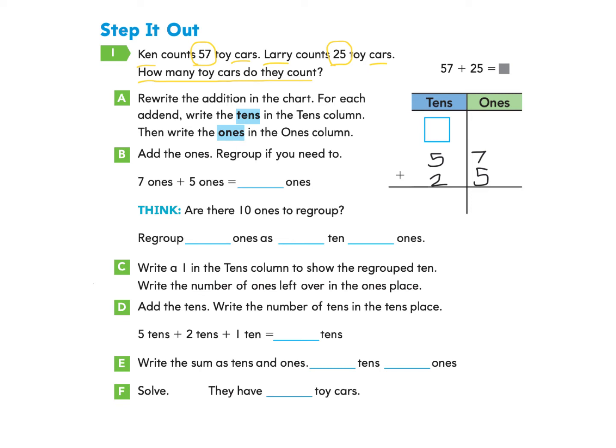Let's take a look at part B. Add the ones. Regroup if you need to. So here we have seven ones and five ones, and we are adding them together. So seven ones and five ones make how many ones? We can count 7, 8, 9, 10, 11, 12. We're counting on, and we find that 7 plus 5 makes 12 ones.